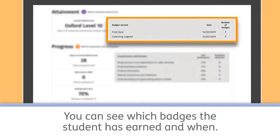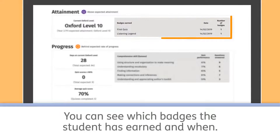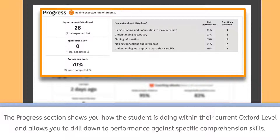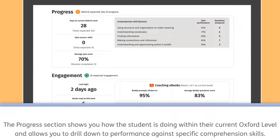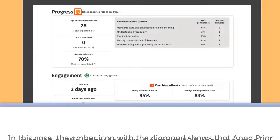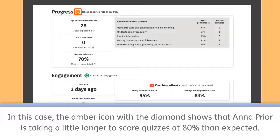You can see which badges the student has earned and when. The progress section shows you how the student is doing within their current Oxford level and allows you to drill down to performance against specific comprehension skills. The coloured status icon shows you how the student is performing within the level. In this case, the amber icon with the diamond shows that Anna Pryor is taking a little longer to score quizzes at 80% than expected.